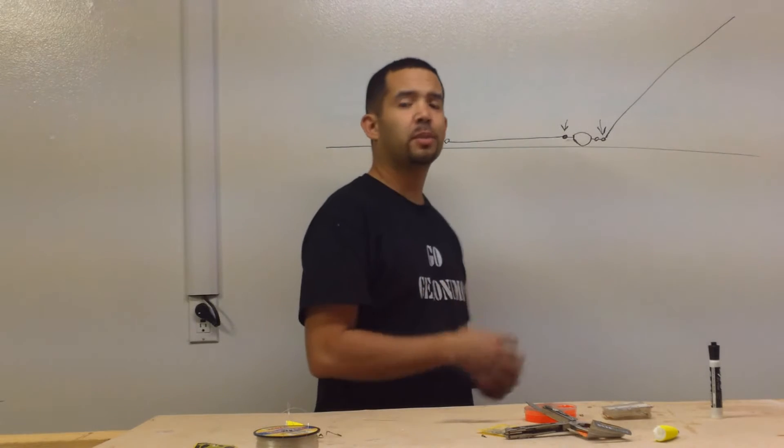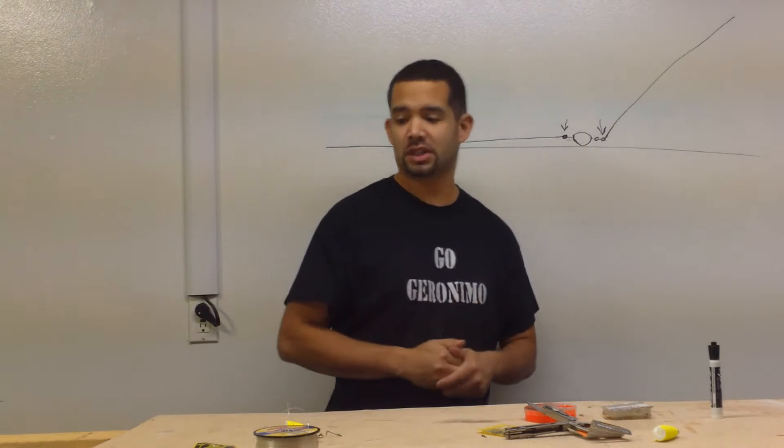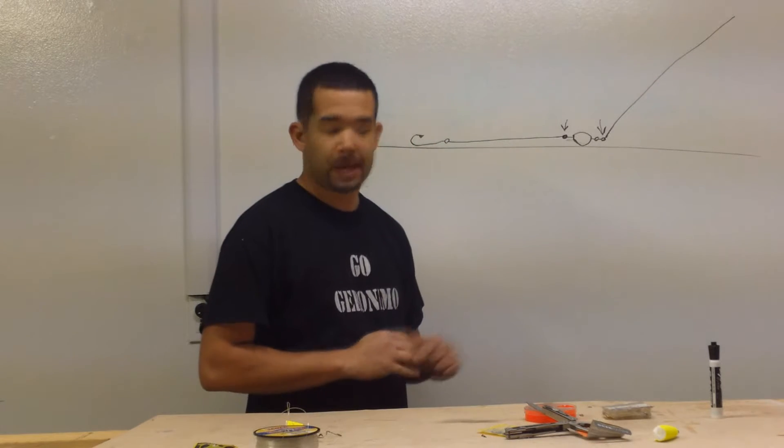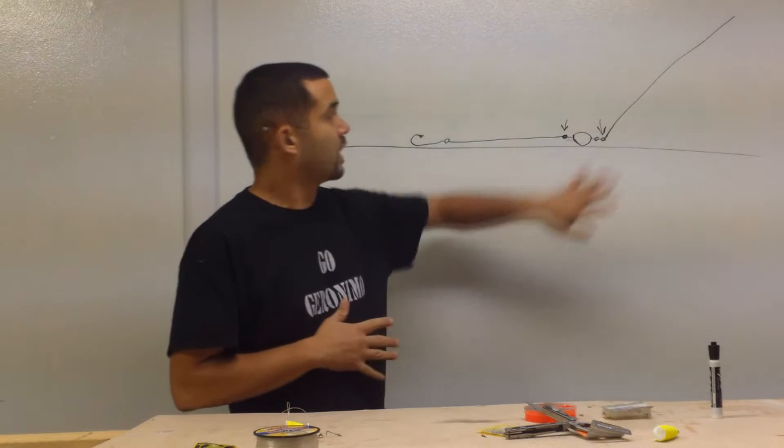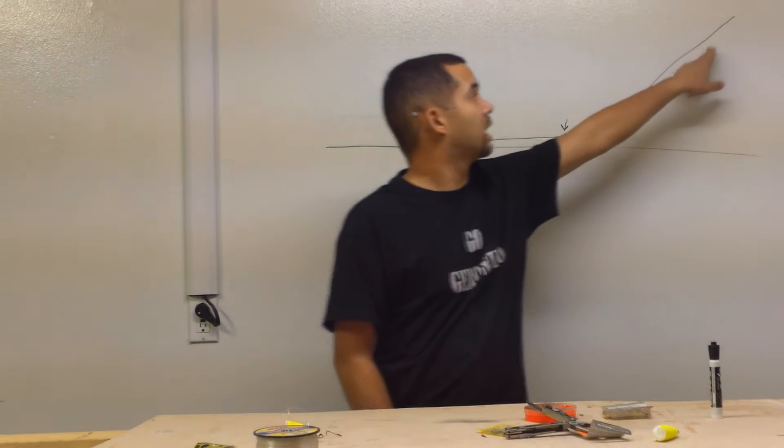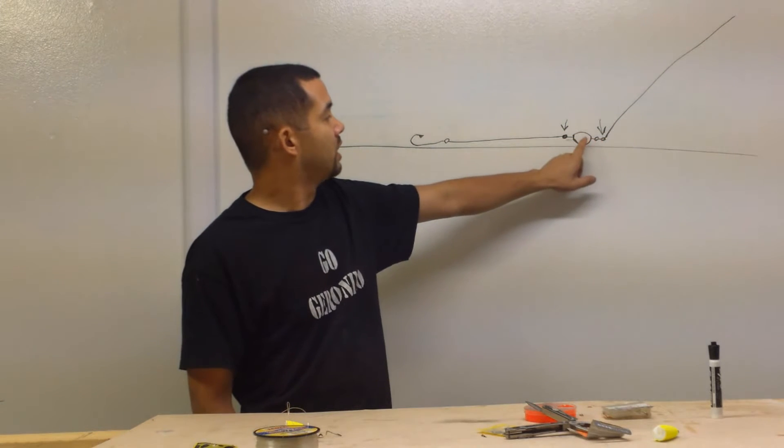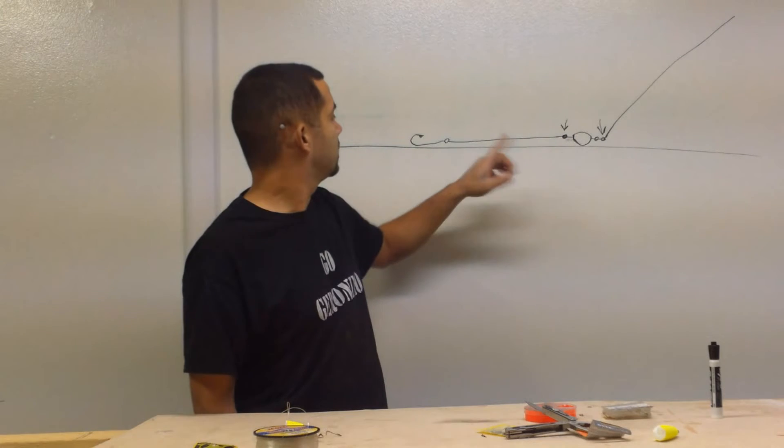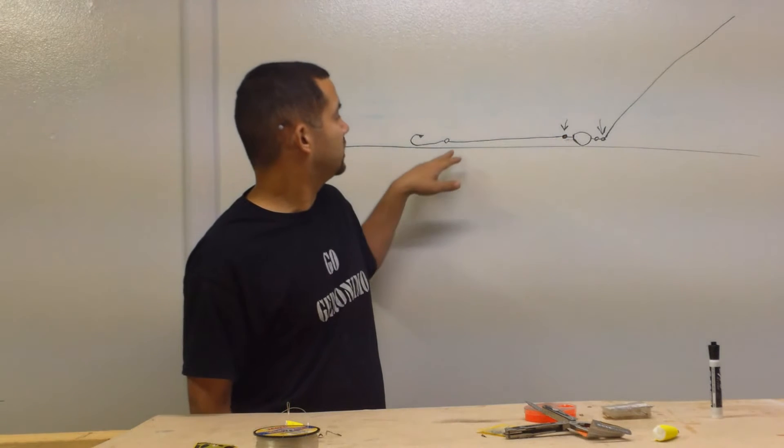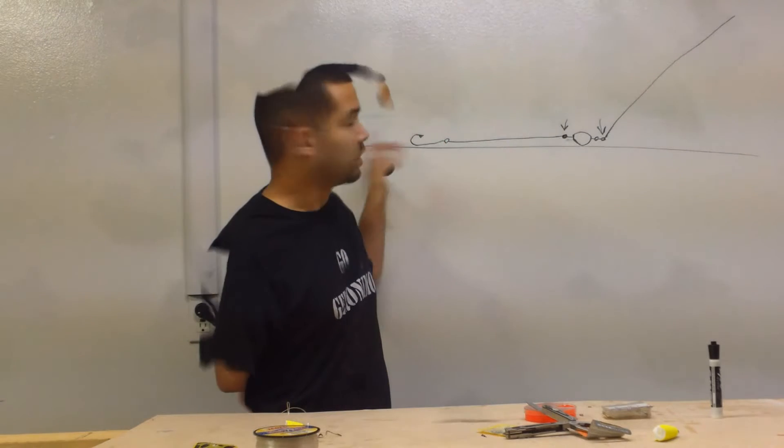We're doing these two together because they're very similar. Both of them have their strong points. For the Carolina rig, which is right here, we have the line coming from our pole. It's going to go to a swivel, egg weight, pea weight, about 24 inches of leader, and a hook.